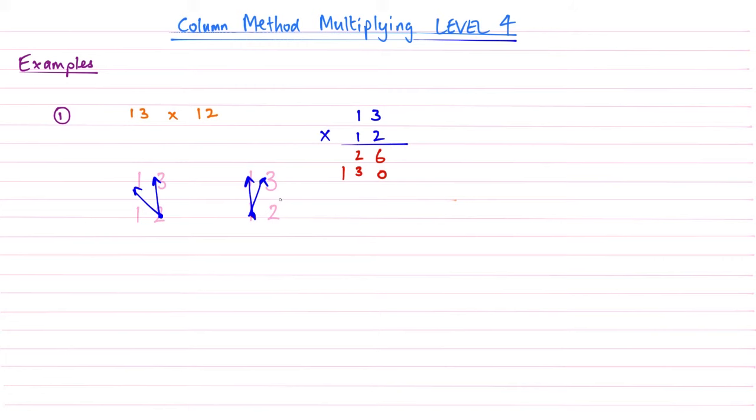Now you can draw a second line underneath there, because now what we're going to do, the next stage after this, is we're going to add these two numbers together, these two red numbers. So 6 add 0 becomes 6, 2 add 3 becomes a 5, then that 1 with that nothing there just becomes 1. So the answer to 13 times 12 is 156.